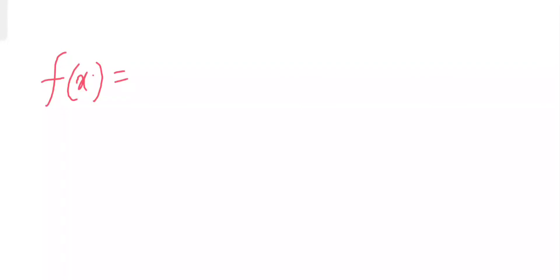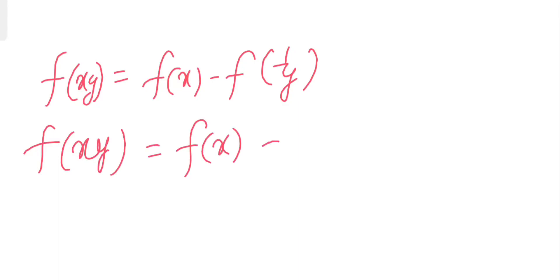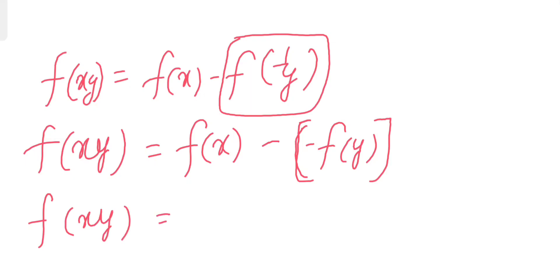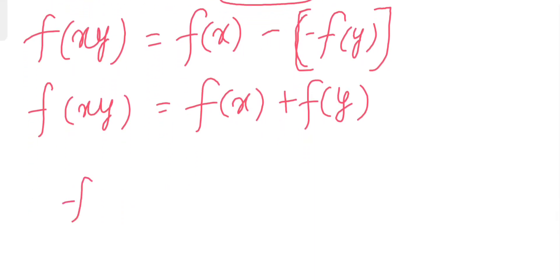Now let's return to the original equation: f of xy equals f of x minus f of 1 over y. From equation 2, we know that minus f of 1 over y equals f of y. So substituting, we get f of xy equals f of x plus f of y. Therefore, f of xy equals f of x plus f of y.